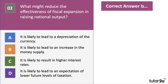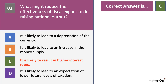Question two: what might reduce the effectiveness of fiscal expansion in increasing national output? Have a go at question two. This question is hinting at when fiscal policy is relatively ineffective in stimulating aggregate demand and GDP. The right answer to question two is C.